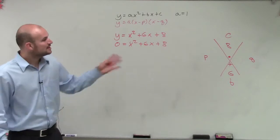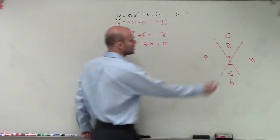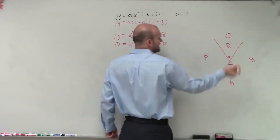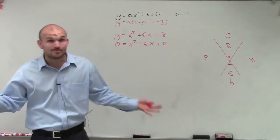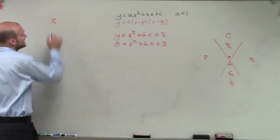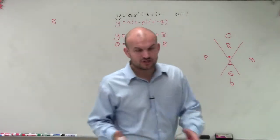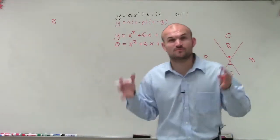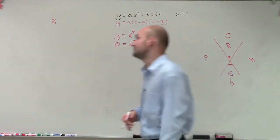So my values of p and q are going to be the values that multiply to give me 8 but add to give me 6. Now there's only so many numbers that multiply to give me a positive 8. So if you're having trouble with this, just write down all the possible factors. What are the two numbers that multiply to give you 8?